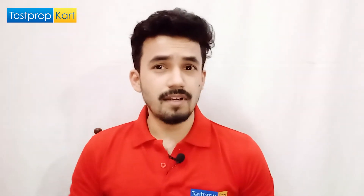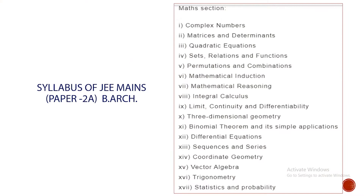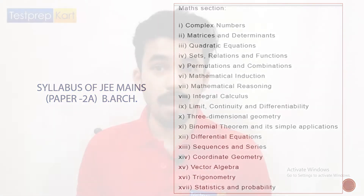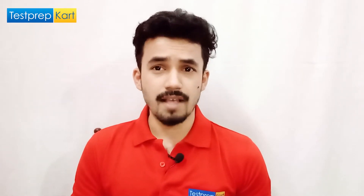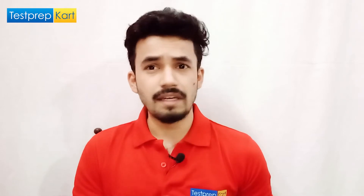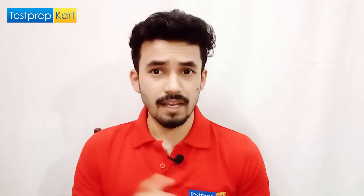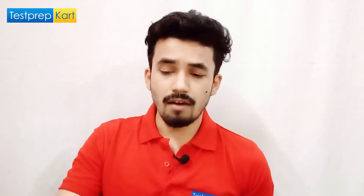Let's start with the syllabus of JEE Main's Paper 2 B.Arch. The mathematics section consists of complex numbers, matrices and determinants, quadratic equations, sets relations and functions, permutation and combination, mathematical induction, mathematical reasoning, integral calculus, limits continuity and differentiability, 3D geometry, binomial theorem, differential equations, sequences and series, coordinate geometry, vector algebra, trigonometry, and statistics and probability. The major portion is from Class 11, which is not too tough.